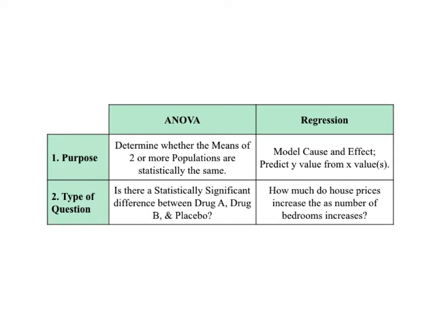Let's start with some key differences. ANOVA and regression differ in their purposes and in the type of question they answer. ANOVA is actually more similar to the t-test than to regression. ANOVA and the two-sample t-test do the same thing if there are only two populations — they determine whether there is a statistically significant difference between the means. ANOVA can also do this for three or more populations. For example, is there a statistically significant difference among the mean effects of drugs A, B, and C? The answer to the question is yes or no.